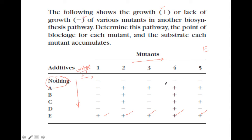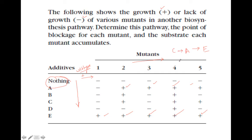The second-highest number of pluses would be A, which grows with mutants 2, 3, 4, and 5 but not mutant 1 — so A will be just ahead of E. So 5 pluses for E, 4 pluses for A. Now let's look for 3 pluses — that is C, which grows with 3 mutants, so C is ahead of A.